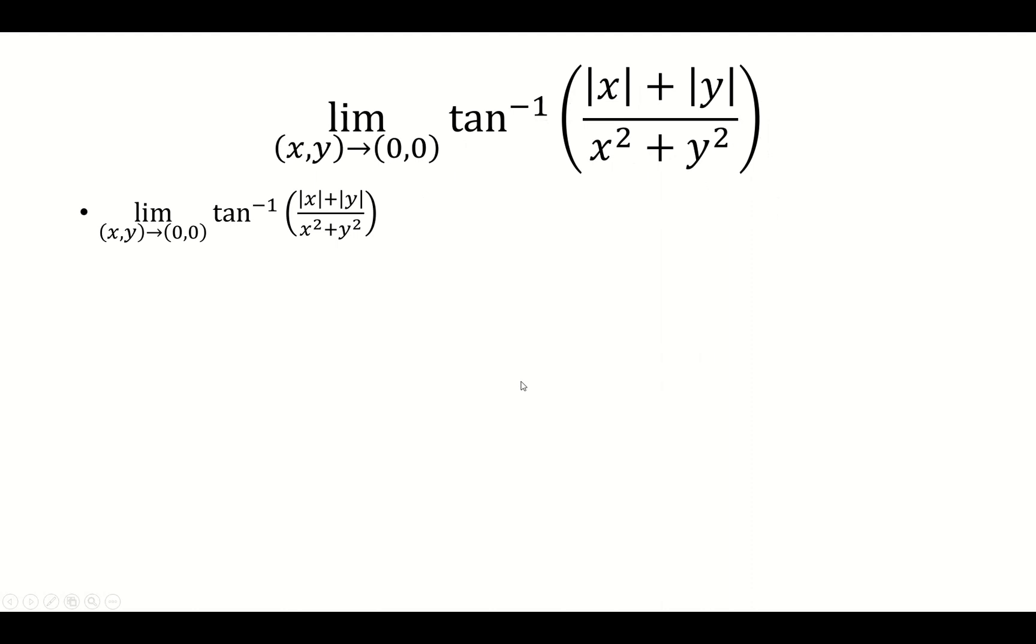For this one, we're going to use polar substitution. So we're going to let r approach 0 and then replace x with r cosine theta, y with r sine theta.